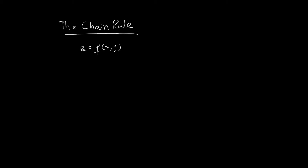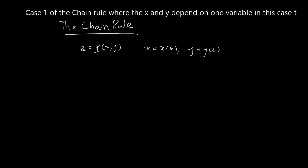Now we're going to look at the chain rule of differentiation for multivariate functions. Suppose w = z is a function of x and y, and furthermore that x itself is a function of t and y is also a function of t. So there are two independent variables that z depends on, and x and y themselves depend on t.